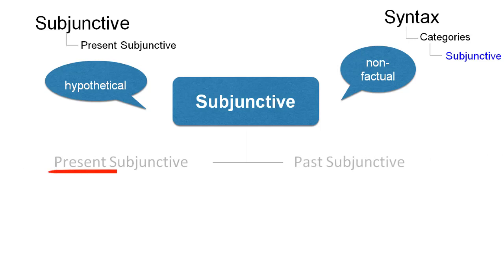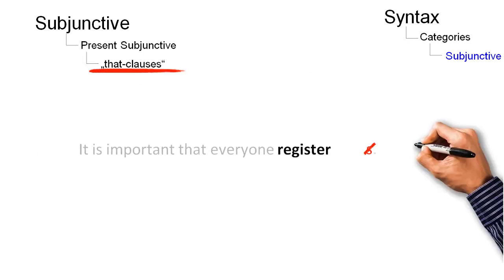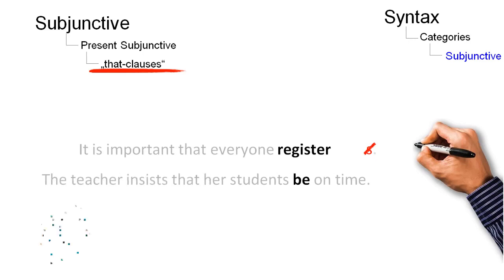The present subjunctive consists of the base form of the verb used where the s-form of the verb would normally occur. The present subjunctive can be used in that-clauses, like 'it is important that everyone register' or 'the teacher insists that her students be on time.'